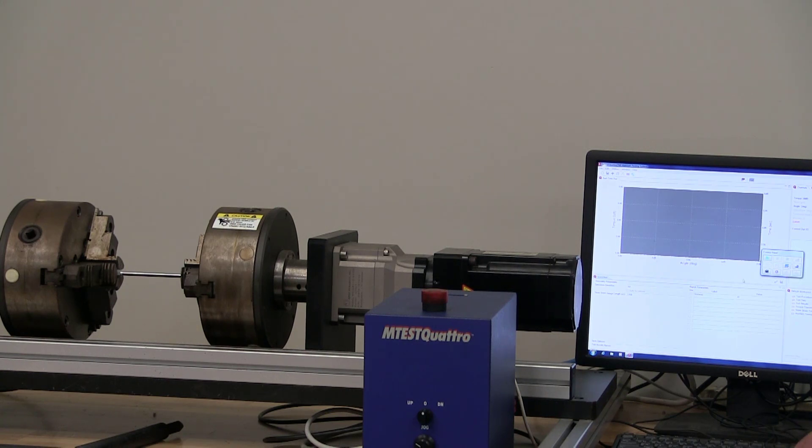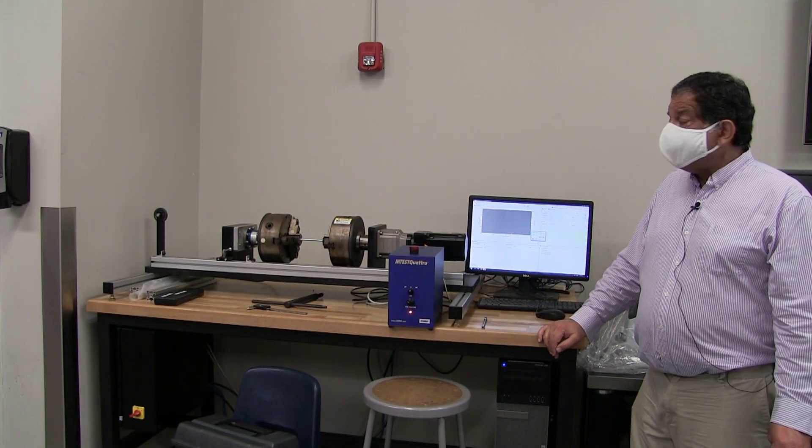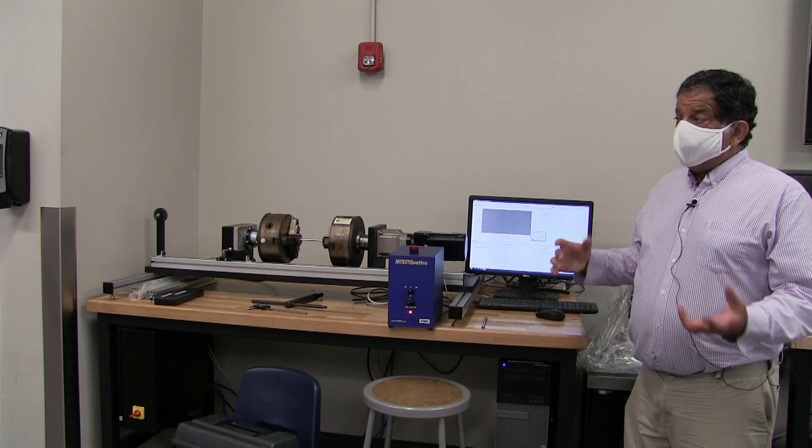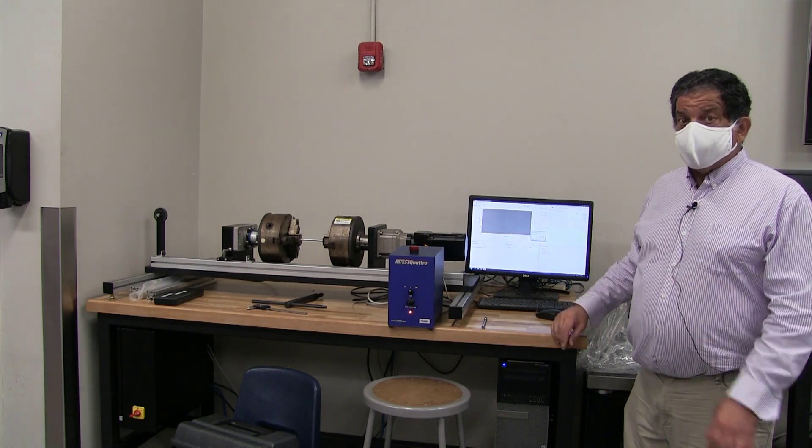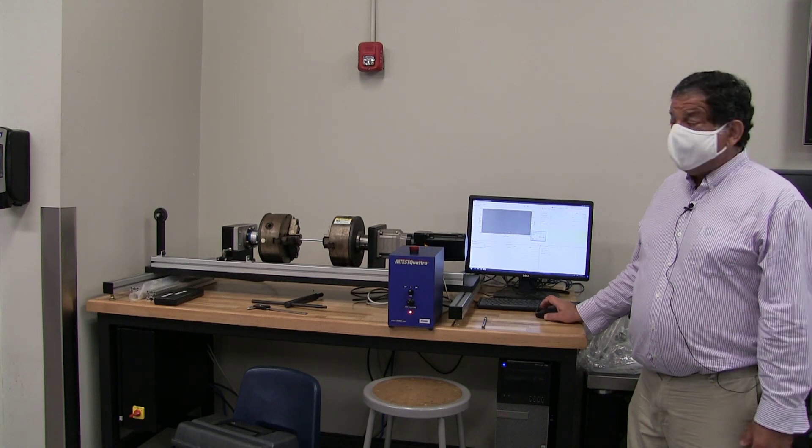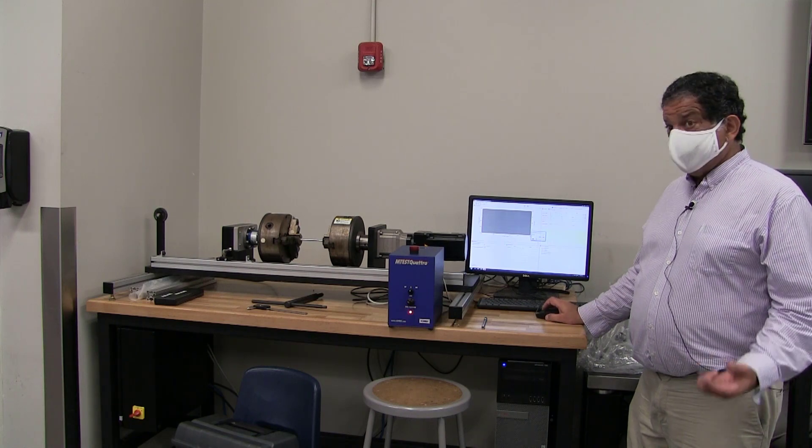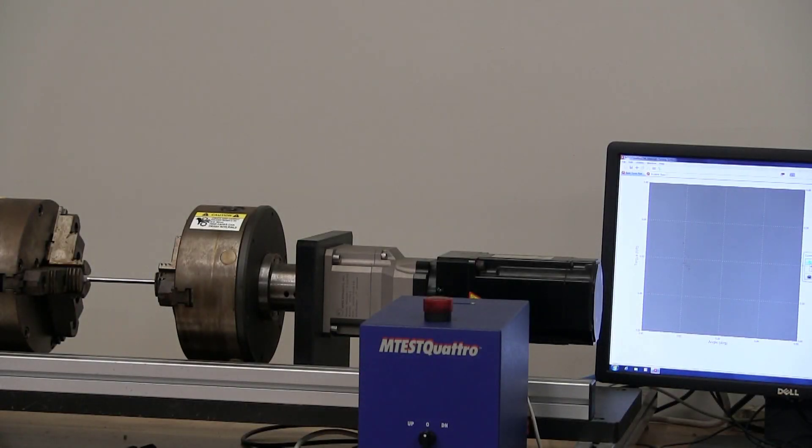One common source of error in this lab is that people forget that the equations that you have in strength of materials, which give you the relationships between torque and twist, all assume that your torque is in radians. You've got to convert your angles from degrees to radians before you do the conversion to shear stress and shear strain. Now we're going to run the experiment.